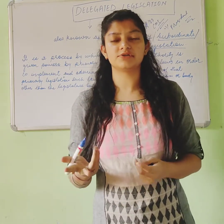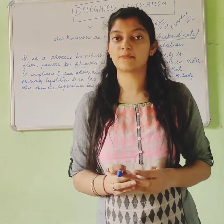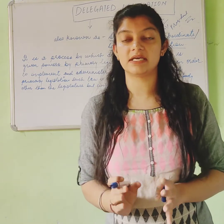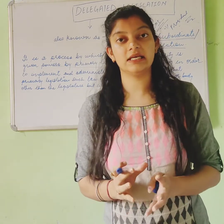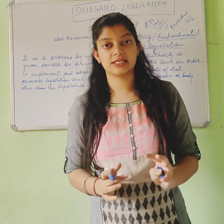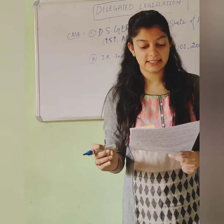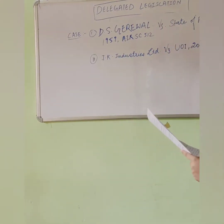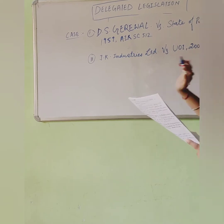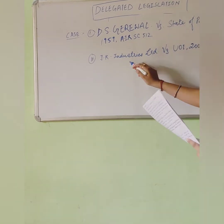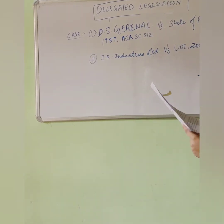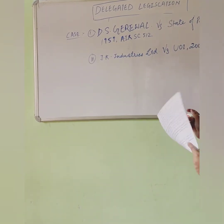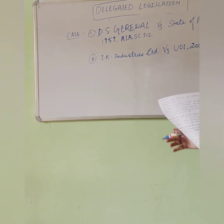These are two small examples of delegated legislation. Now there are some case laws. The first case is D.S. Garawal vs. State of Punjab, 1959, and the second case is J.K. Industries Ltd. vs. Union of India, 2007.